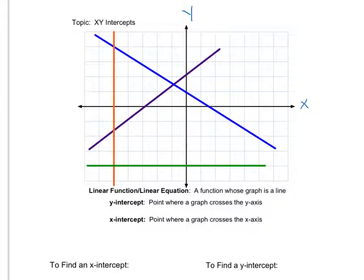If I start tracing my y axis, this point here is going to be the y intercept of my purple line. As I continue down, this point here will be the y intercept of my blue line, and further down the y intercept of my green line. Similarly, with my x intercepts, it's going to be the point where I cross the x axis. If I trace the x axis, here is the x intercept of my red line, my purple line, and my blue line.